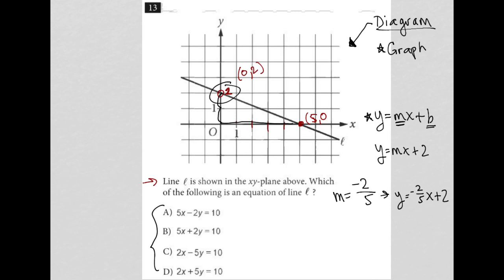So the only thing I need to do to convert this to standard form is to get rid of this fraction here to start off with. So I'm going to multiply the entire equation by 5, which would give me 5y equals negative 2x plus 10.